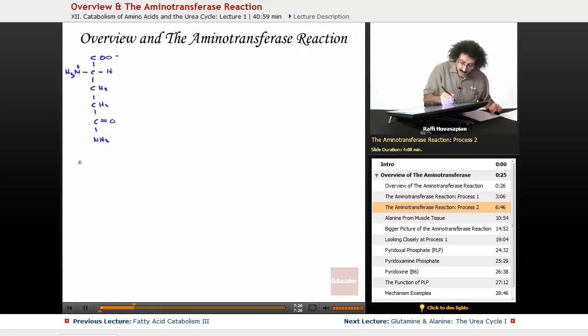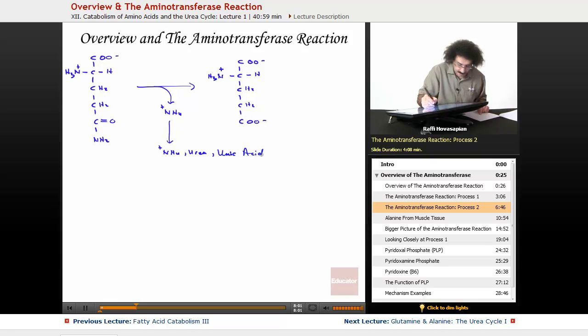This goes to COO minus, this is H, this is NH3 plus, CH2, CH2, CH2. And of course, NH4 plus, which goes on to release either the NH4 plus, the urea, or the uric acid. So this one, here we have glutamine.